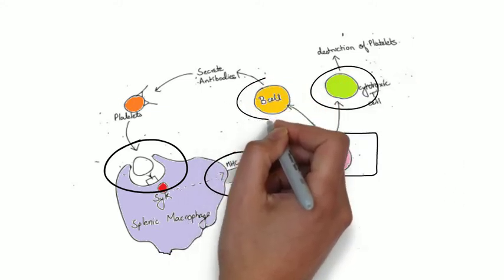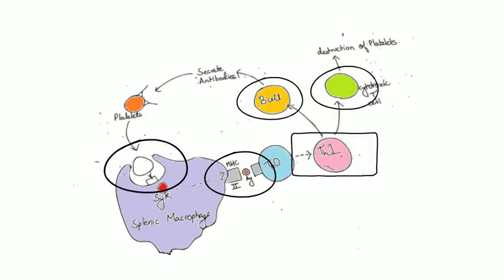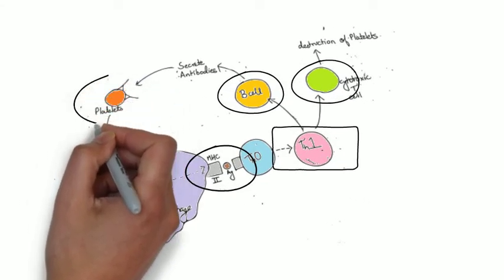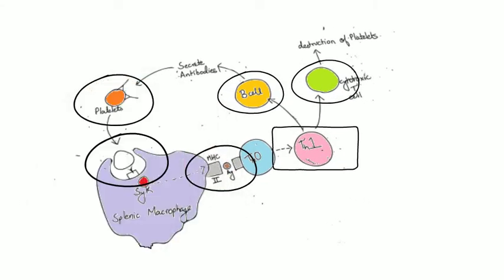In addition, TH1 cells also stimulate B cells to produce immunoglobulins. These immunoglobulins bind to the platelets. The opsonized platelets then bind with receptors in splenic macrophages, which activates splenic tyrosine kinase and the platelets are phagocytosed and destroyed.